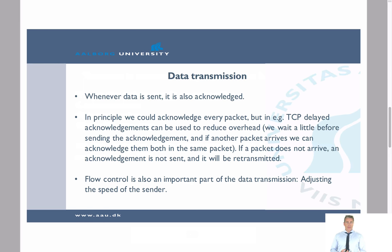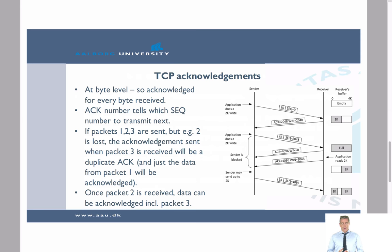For TCP acknowledgments, we acknowledge on the byte level. If you look at the figure here, we have a sender and a receiver. When we send the first packet, in this case we set the sequence number to zero as a reference point. Usually the absolute sequence number would be different because it is randomized from the sender side, but we often refer to relative values because they are easier to handle. So we start with sequence number zero and send two kilobytes of data from the sender to the receiver.